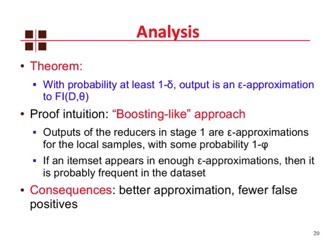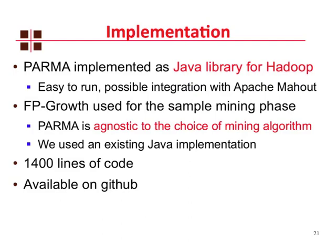We implemented PARMA as a Java library for Apache Hadoop, which makes it easy to run and allows possible integration with Apache Mahout — a collection of machine learning and data mining algorithms for Hadoop. We used FP-Growth for the sample mining phase in the first stage, but PARMA is agnostic to the choice of mining algorithm and we just used an existing Java implementation. In total it's about 1,400 lines of code, and it's available on GitHub if you want to look at it or modify it.